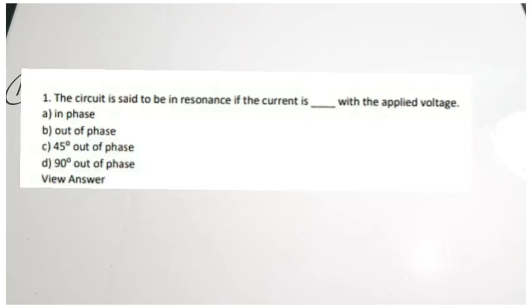Let us see the solutions one by one. The first question is: the circuit is said to be in resonance if the current is dash with the applied voltage. We have actually done a separate video on resonance in series RLC circuit, given in the network analysis playlist.